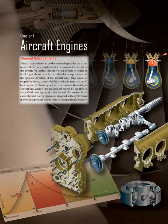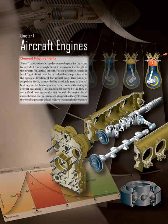Chapter 1: Aircraft Engines General Requirements. Aircraft require thrust to produce enough speed for the wings to provide lift, or enough thrust to overcome the weight of the aircraft for vertical takeoff. All heat engines have in common the ability to convert heat energy into mechanical energy by the flow of some fluid mass, generally air, through the engine.